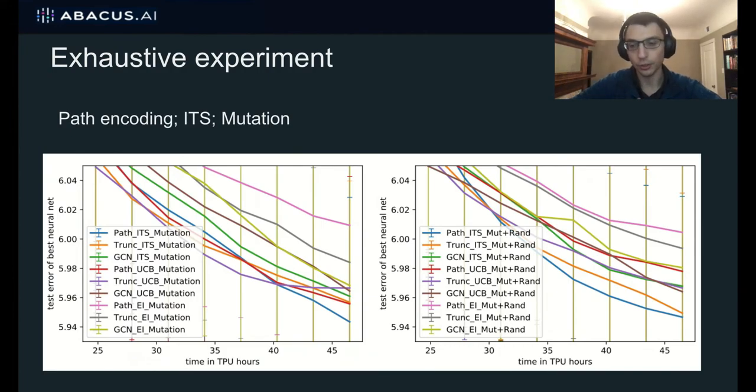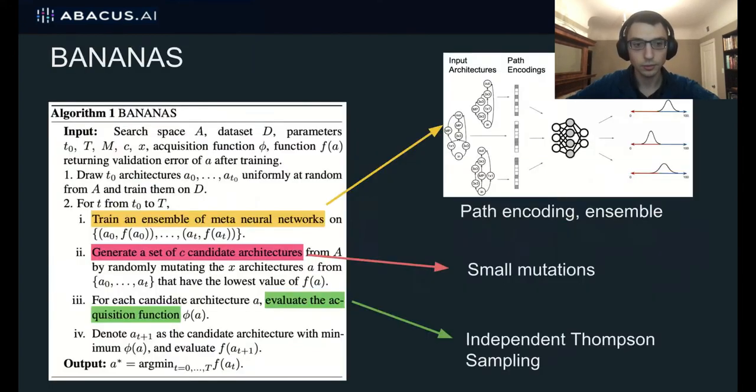So those are our experiments on all the different parts of the framework. And we did one final experiment, which is where we varied all parts of the framework exhaustively at the same time. So our experiments on the last few slides were a controlled experiment where we only varied one part of the framework at a time, but now we just do a full exhaustive experiment. And our results are the same. We find that the path encoding, independent Thompson sampling and mutation is the best combination of components.